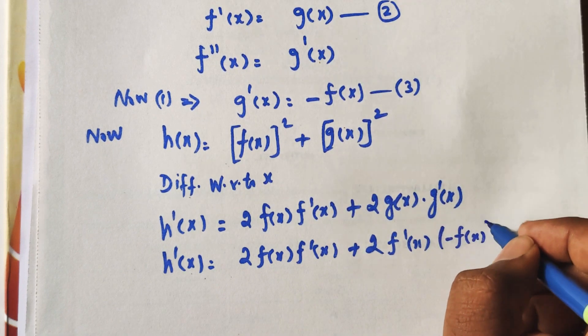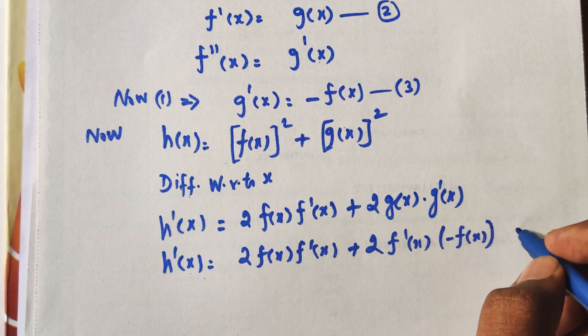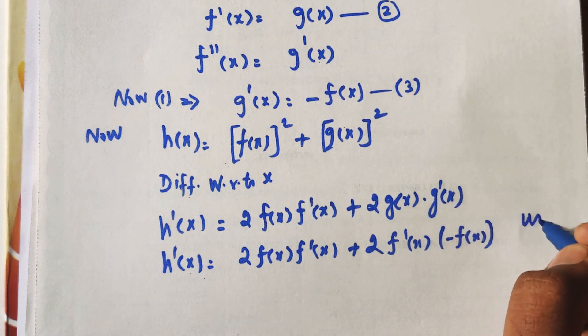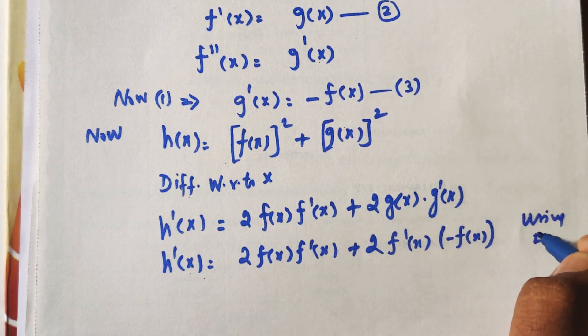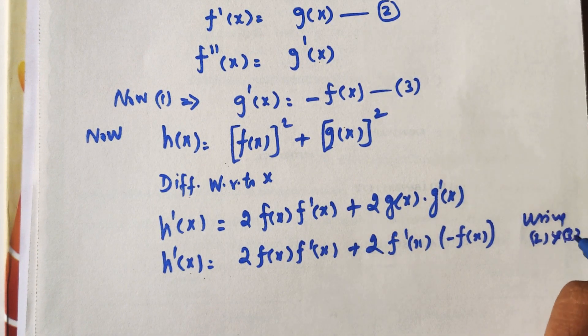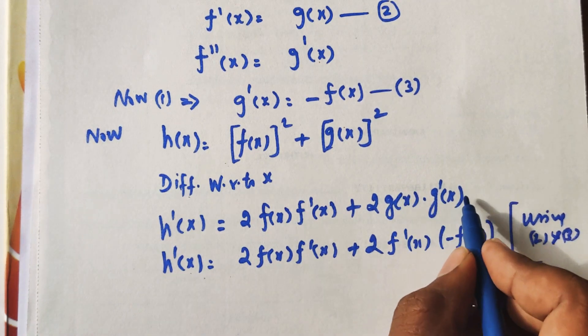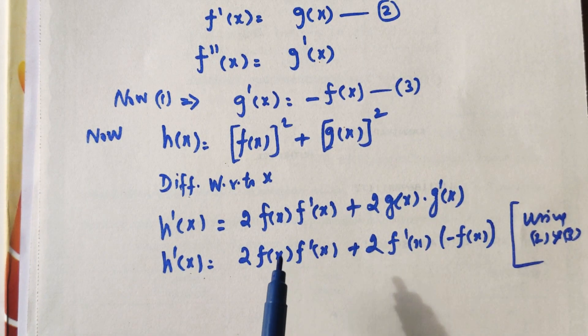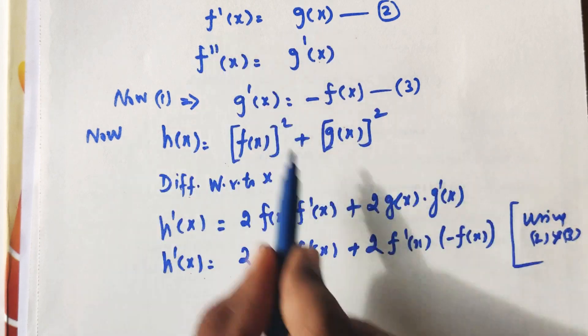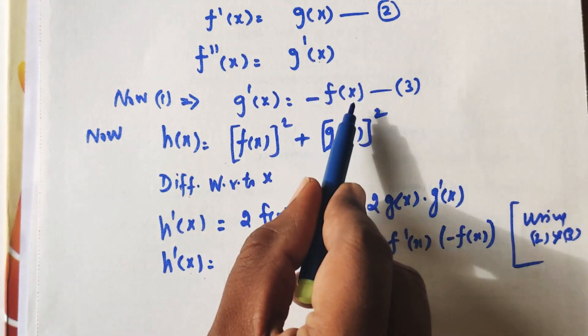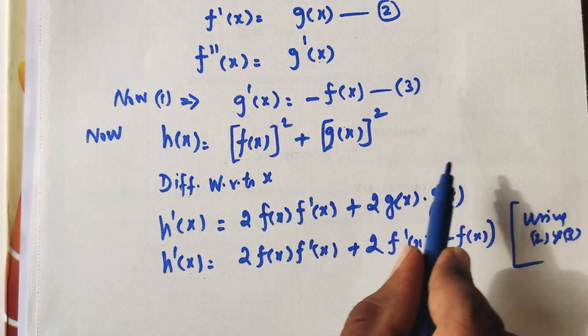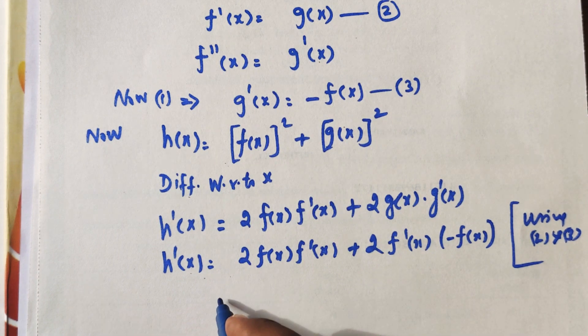Now use equations 2 and 3. F dash X equals G of X, and G dash X equals minus F of X.